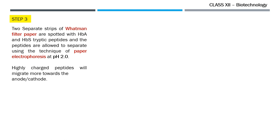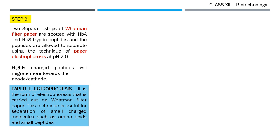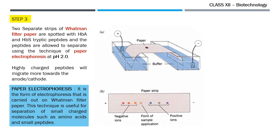In the third step, Ingram performed paper electrophoresis. This technique is useful for separation of small charged molecules such as amino acids and small peptides. He took two separate strips of Whatmann filter paper, spotted one with the normal hemoglobin tryptic peptides and the other with the sickle cell hemoglobin tryptic peptides, and dipped both filter papers in buffer at pH 2. After some time, the peptides started separating on the basis of their charge. The negative and positive peptides moved in a linear fashion on the paper strip.